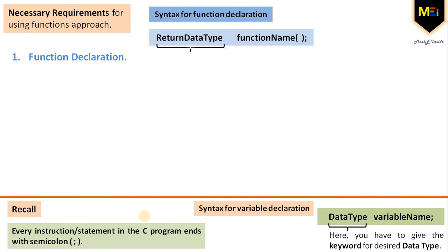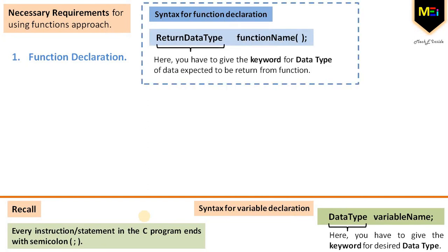The very first is the function declaration. This approach is analogous to variable declaration. Let's look at the syntax for function declaration: you have to mention the return data type, then space, then the function name followed by open and close parenthesis, then semicolon at the end. Here you have to give the keyword for the data type of data expected to be returned from the function. This will be discussed more elaborately as and when required.